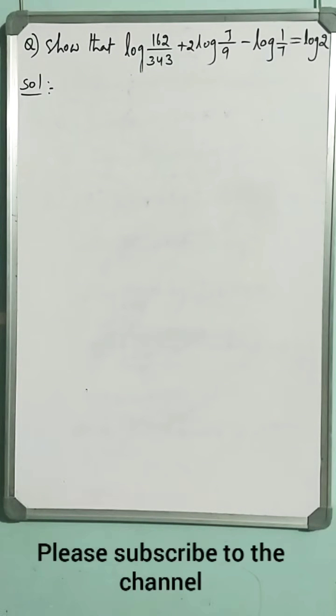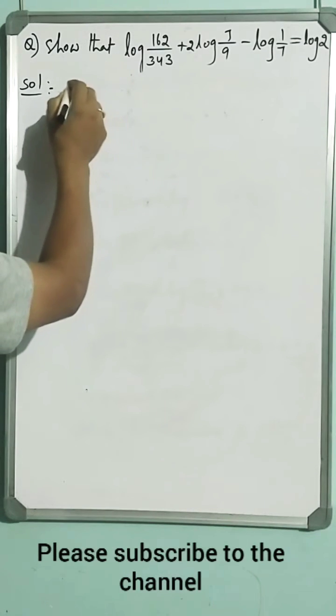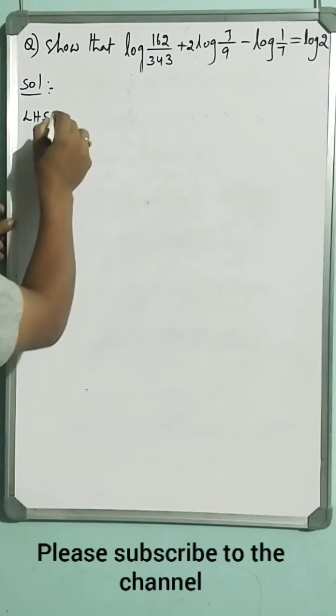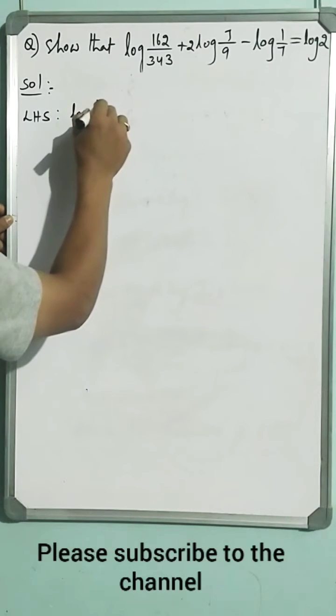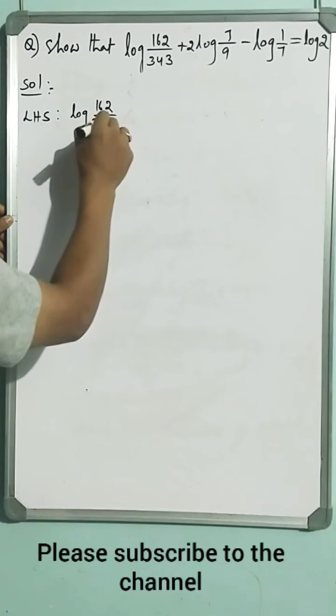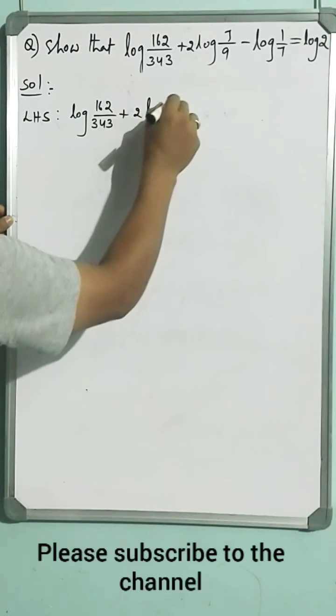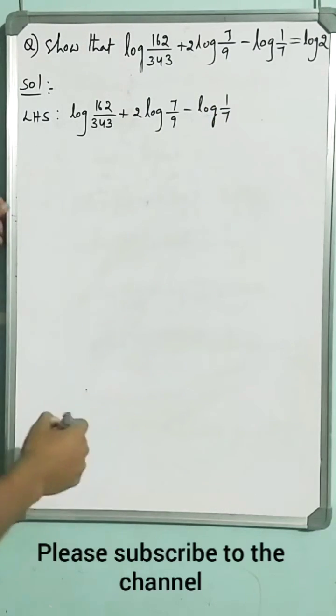Let us go for the proof. By using the logarithmic laws we will solve this equation. Let us prove the statement. Take LHS: log 162 by 343 plus 2 log 7 by 9 minus log 1 by 7.